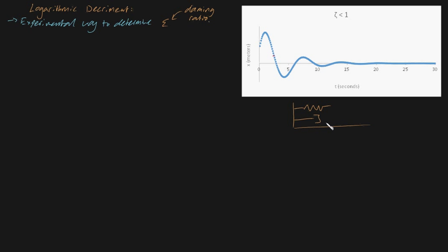So let's go back to our standard spring-mass-dampener system. We've got a spring, we've got a dampener, and it's connected to a mass. We've shown in a previous video that depending on our values of the spring constant and dampening constant, k and c, then our mass can, in some specific cases, oscillate back and forth indefinitely with an ever-decreasing amplitude. Just imagine this block oscillating back and forth, and gradually its amplitude approaches zero as time approaches infinity. This is what we call underdamped motion.